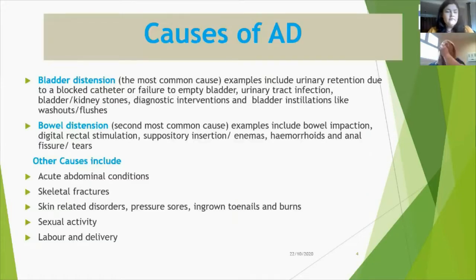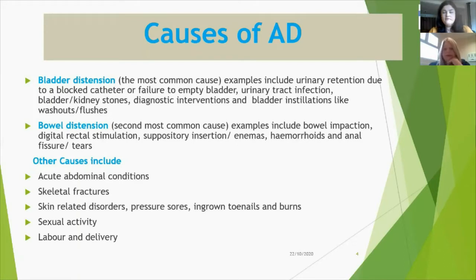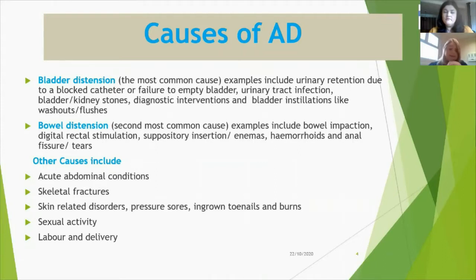In about 90% of cases the main culprit that will cause autonomic dysreflexia will be the bladder — for example, a blocked catheter, kinked tubing, an overfull drainage bag. It can sometimes happen as a result of urinary investigations such as urodynamics or a flexcystoscopy for stones. Urinary tract infections, kidney stones, bladder stones, and bladder washouts have also been reported as causes. The next most common cause is the bowel.